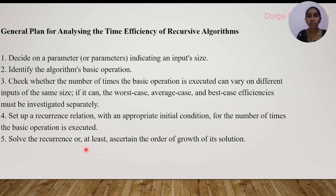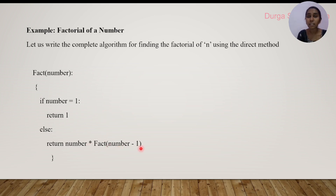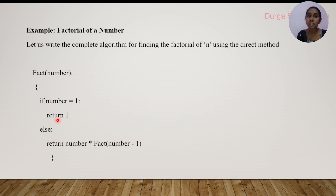Let's apply this to the factorial function fact(number), calling it with 5. Since number ≠ 1, it goes to the else branch: 5 × fact(4), then 5 × 4 × fact(3), then 5 × 4 × 3 × fact(2), then 5 × 4 × 3 × 2 × fact(1). When number equals 1 it returns 1, so the full result is 5 × 4 × 3 × 2 × 1 = 120.